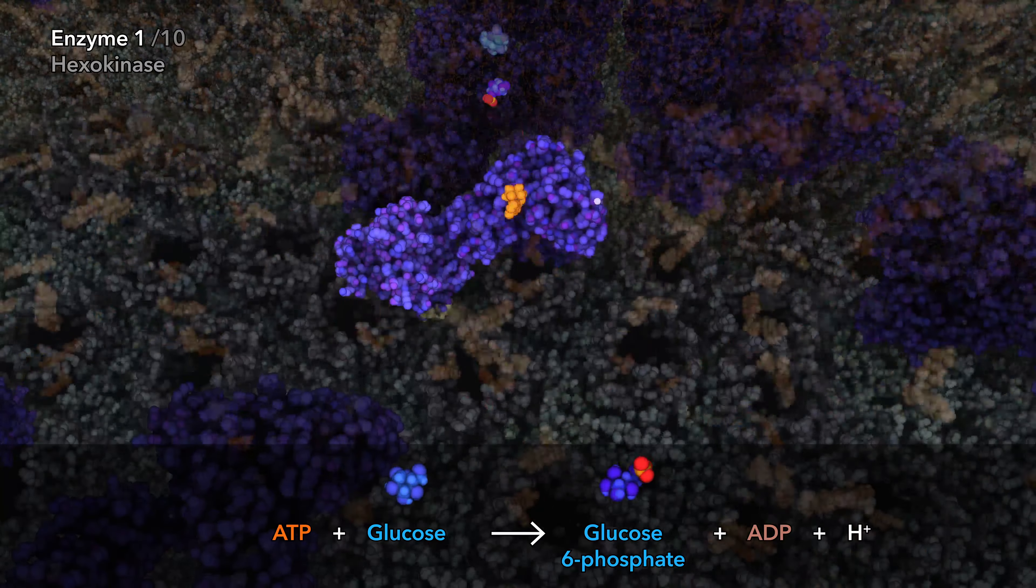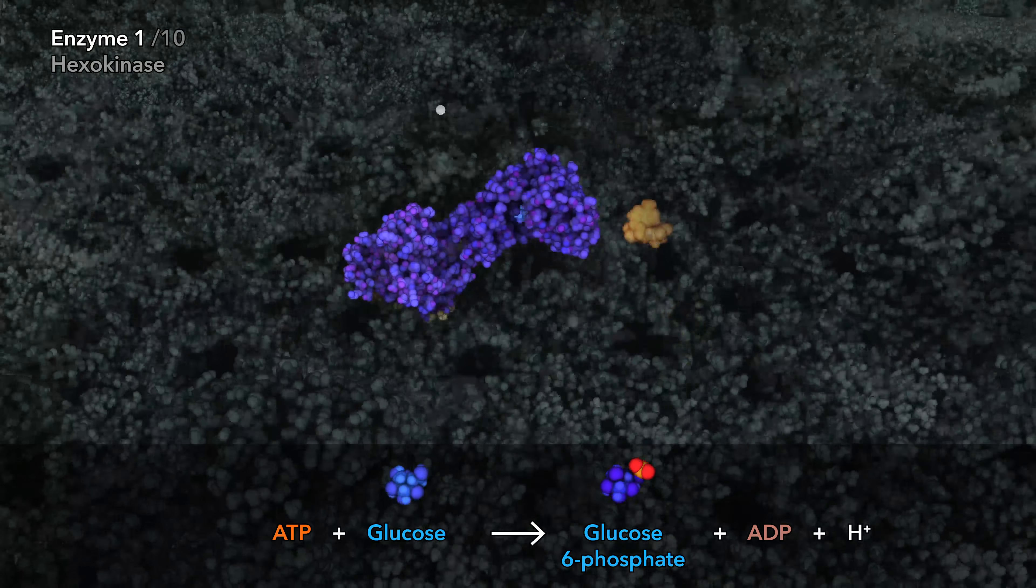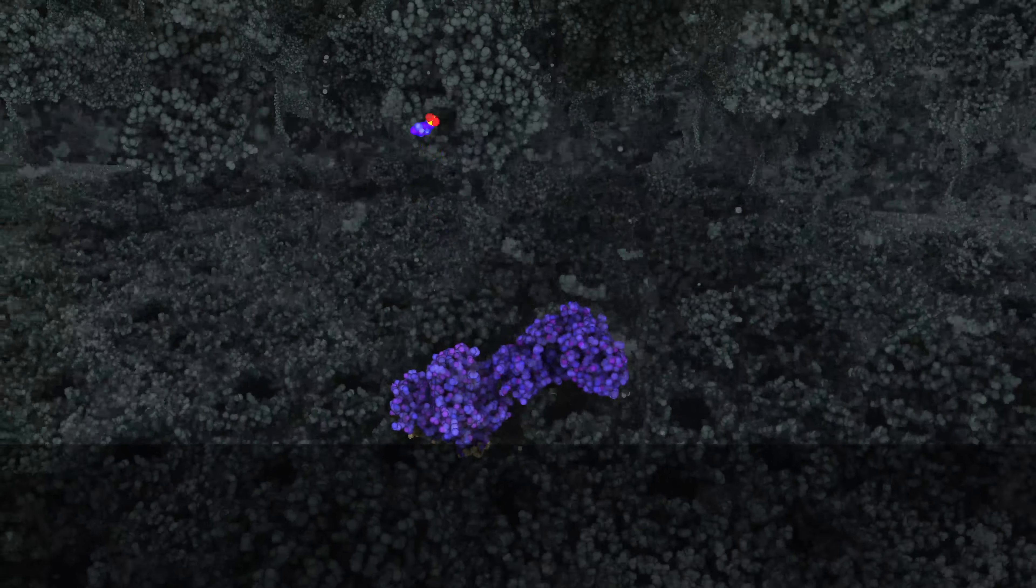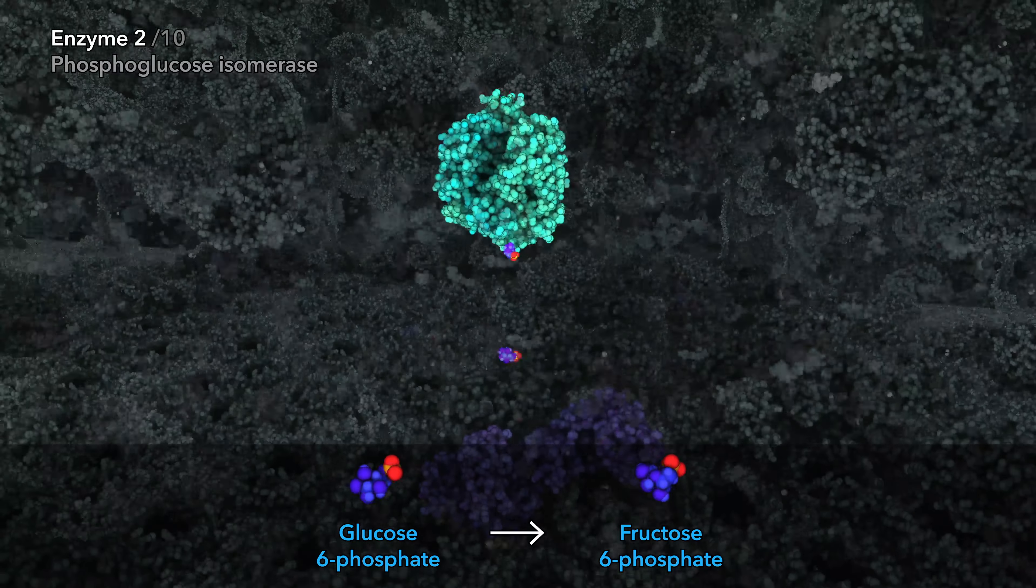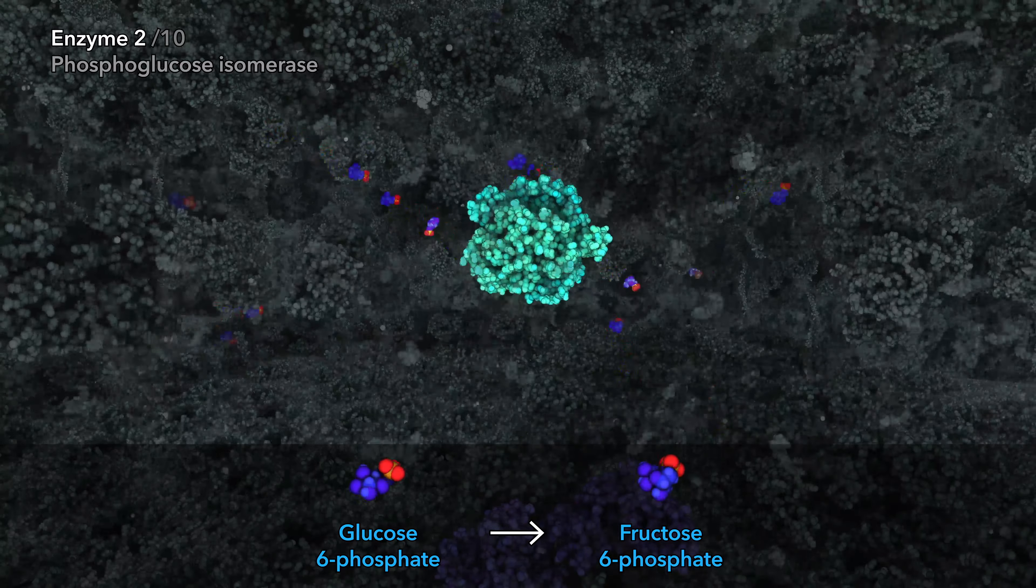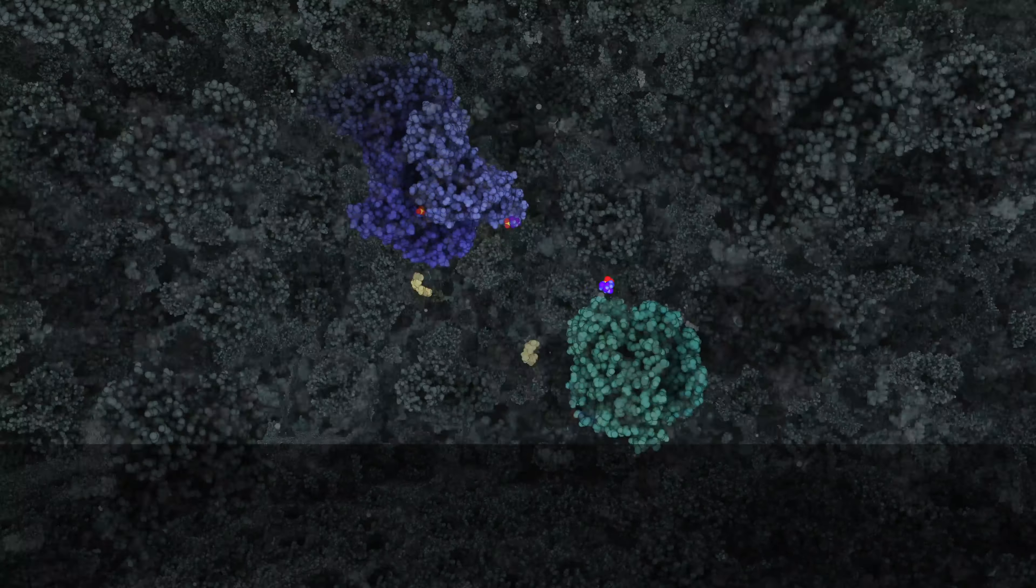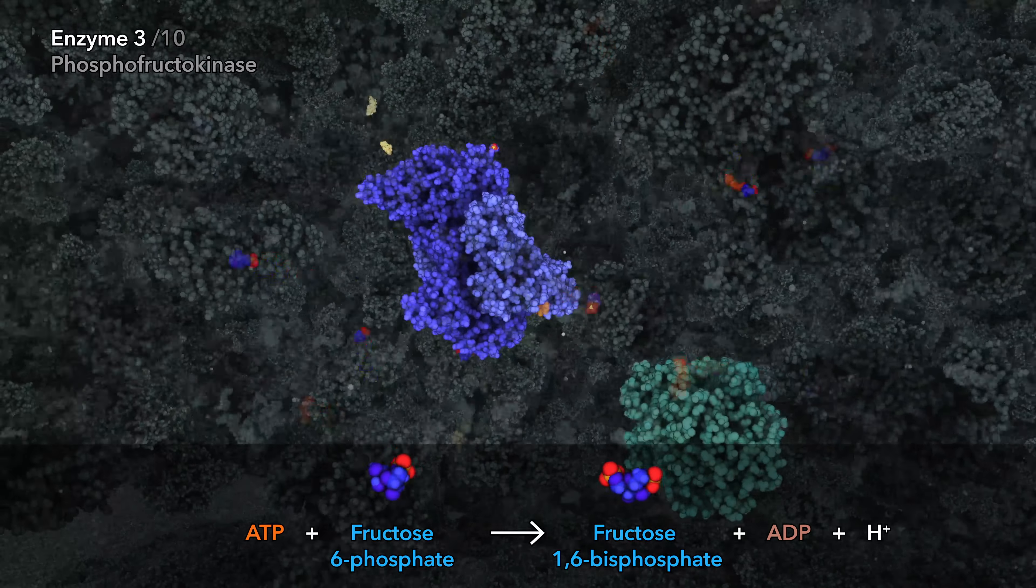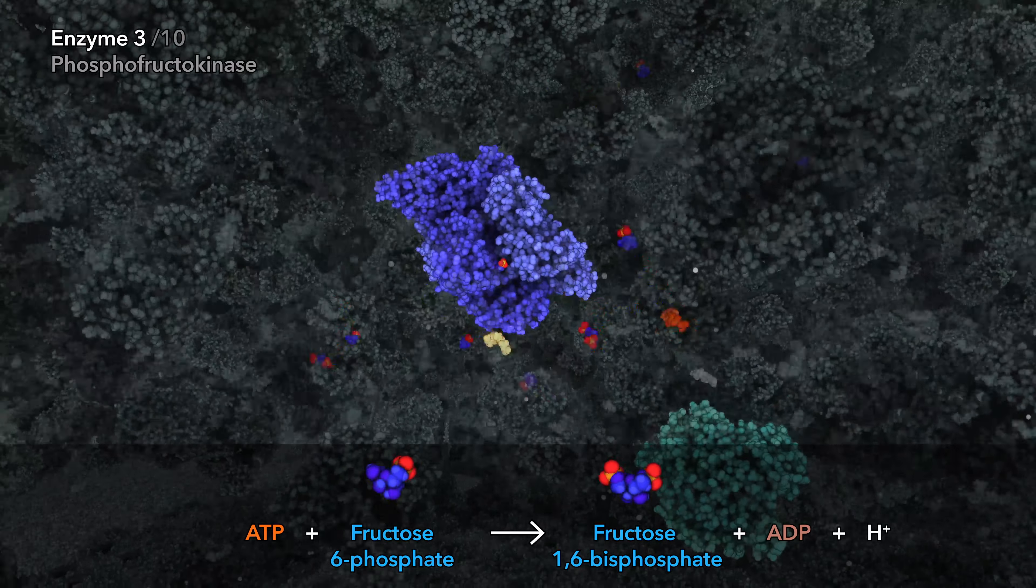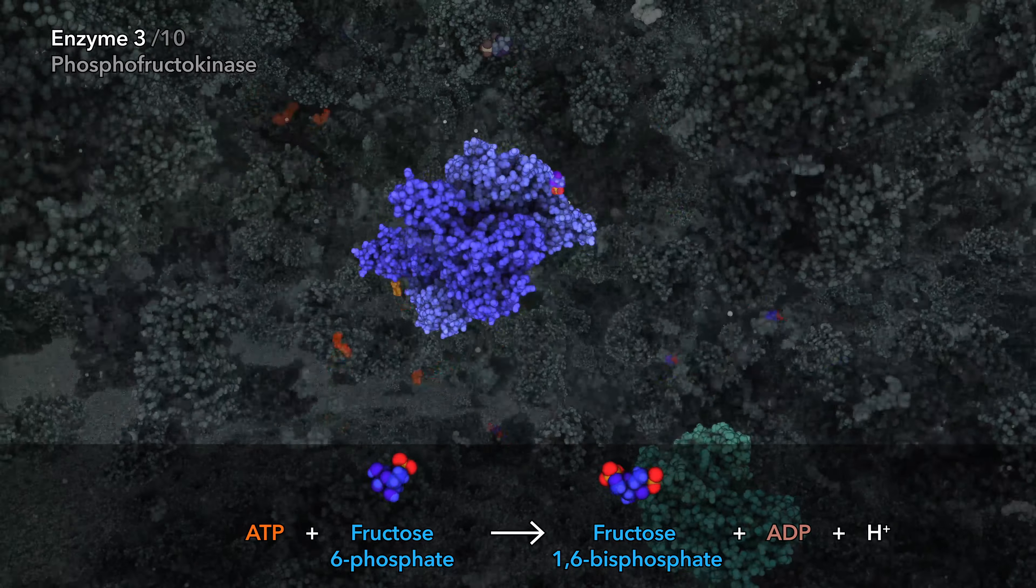The reaction of the first enzyme transfers a phosphate group from ATP to glucose, creating glucose 6-phosphate. The second enzyme rearranges glucose 6-phosphate into its isomer, fructose 6-phosphate. The third enzyme uses a second molecule of ATP, creating fructose 1,6-bisphosphate. The 6-carbon sugar is now ready to be broken apart.